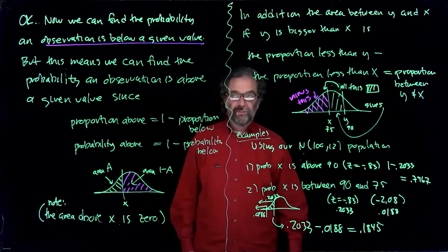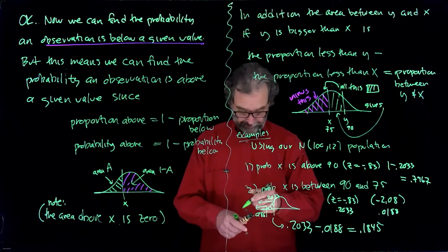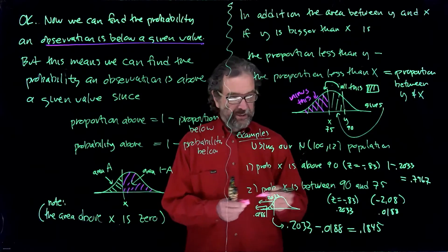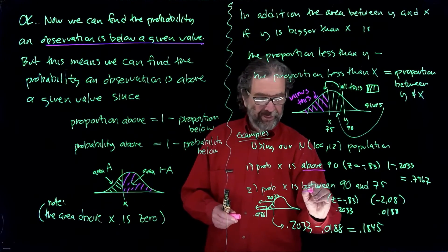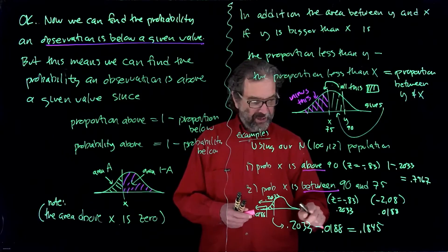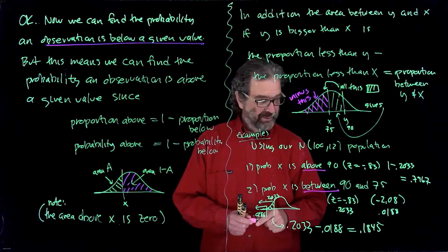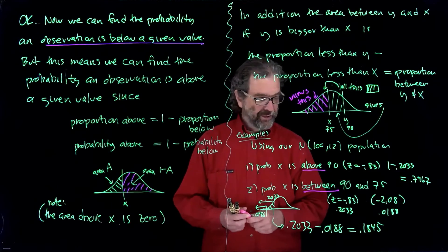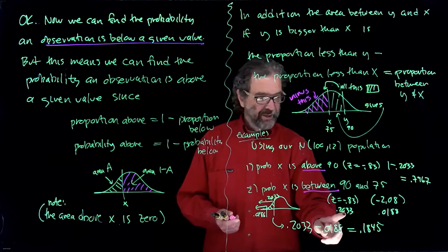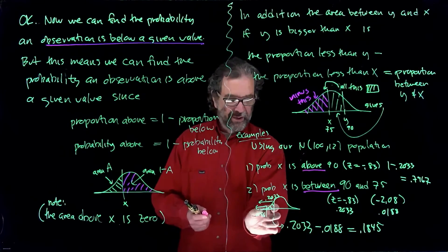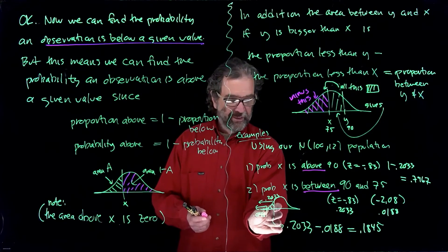So above is 1 minus. In between, you take the two areas, and you take the large one and subtract off the small area. It'll always work out that way. Big area minus small area gives the area in between.